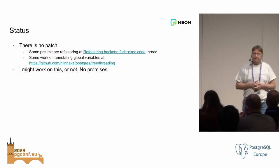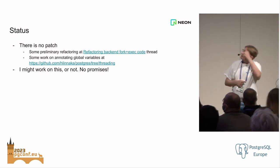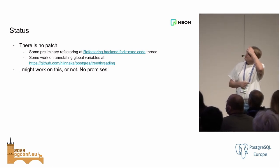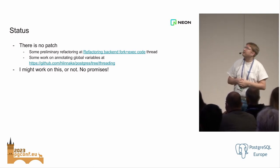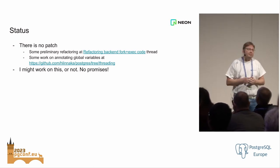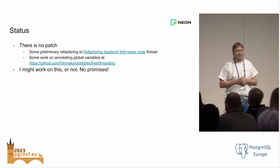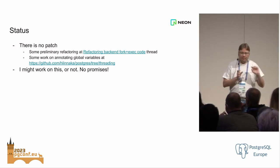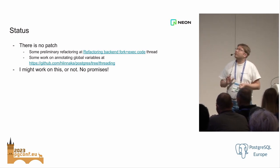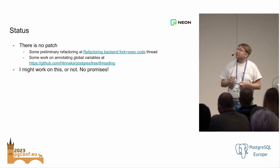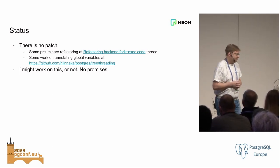I did a little bit of poking around. There's a thread on my GitHub page — it doesn't do multi-threading. It's like going through all of the global variables that we have and annotating them for what they are, because that's going to be one of the first steps we will need to do with multi-threading. But there is no patch.